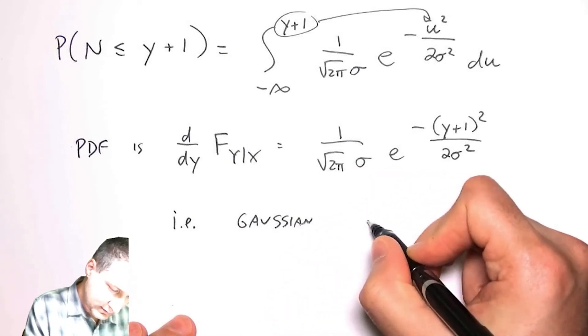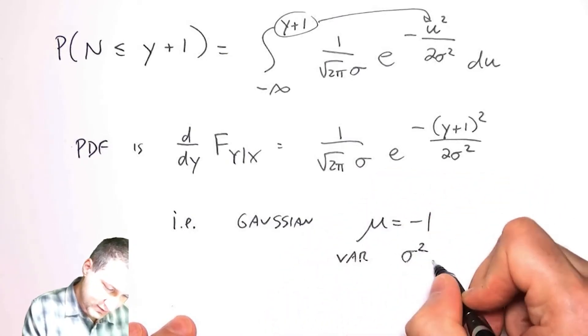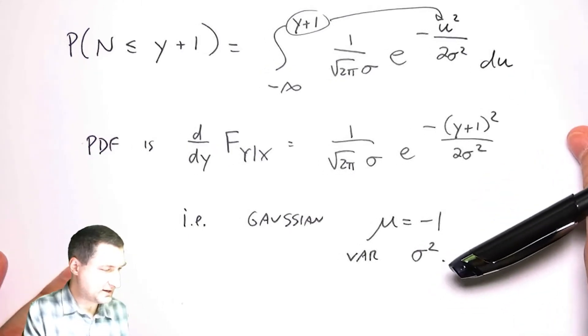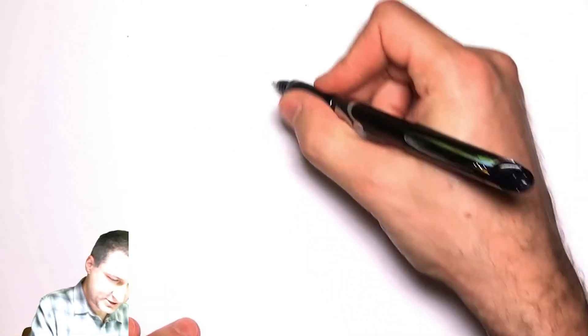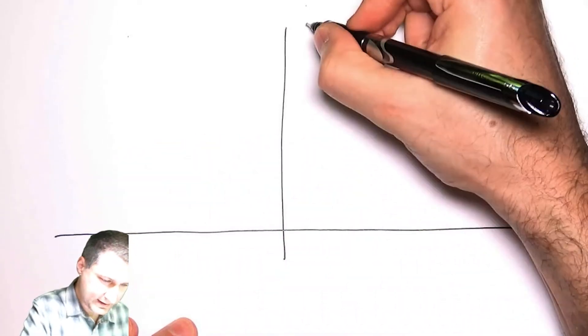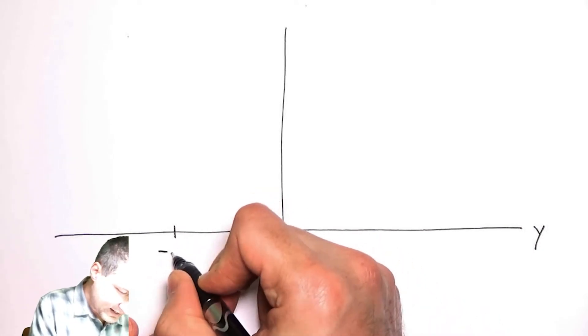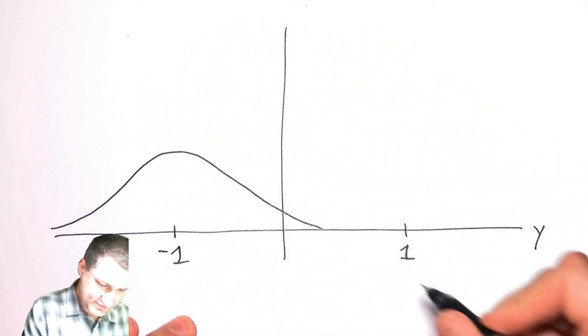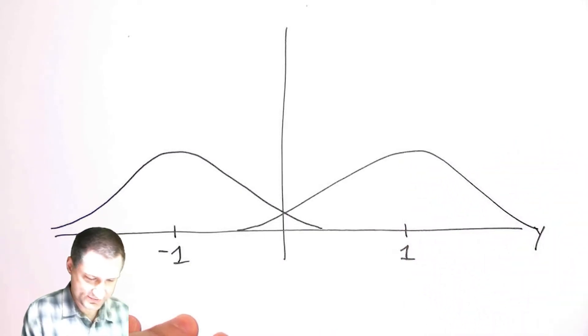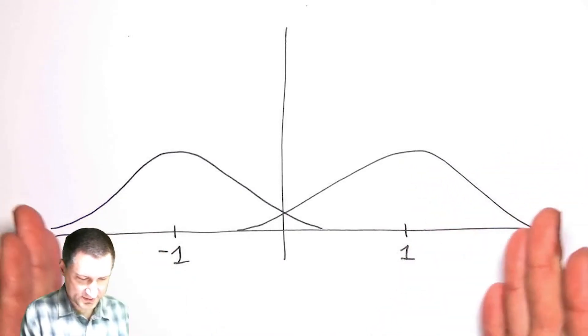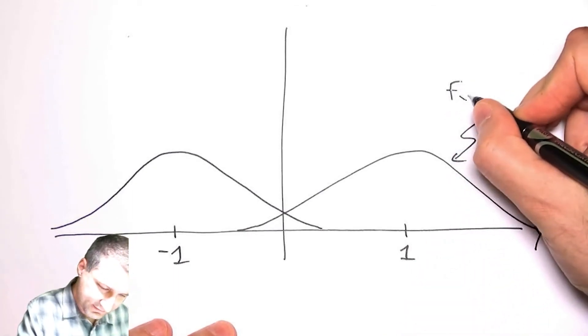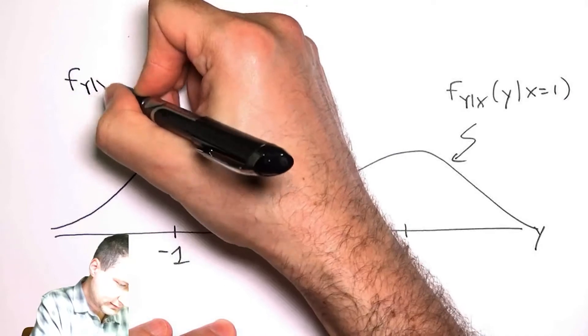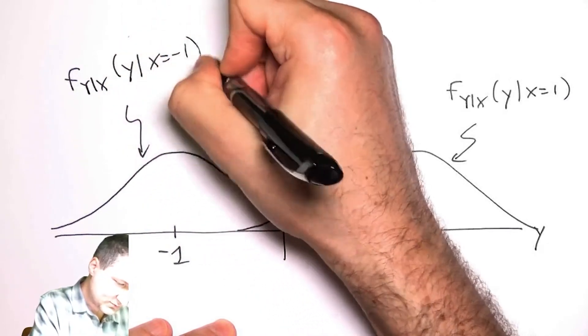The same way, if I was to do this for the positive one case, I would get another Gaussian. So what I found out is that if I draw a picture, here are the possible values of y, this is my probability axis. I have minus one and plus one. The PDF conditioned on minus one looks like this, and the PDF conditioned on plus one looks like this. These are the conditional means and the variance of each of these things is the same sigma squared. This is basically the conditional PDF given that x equals minus one.